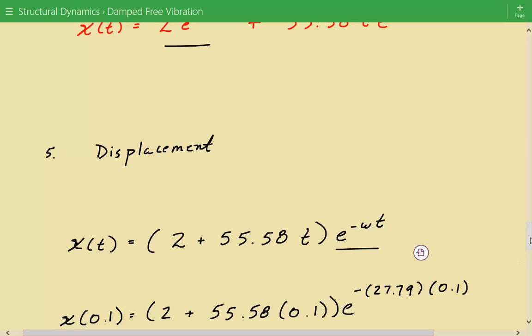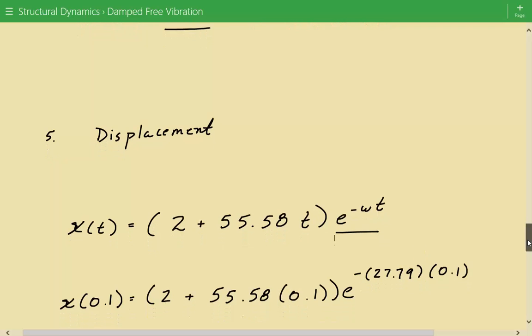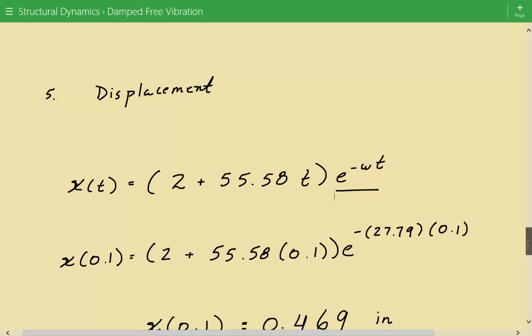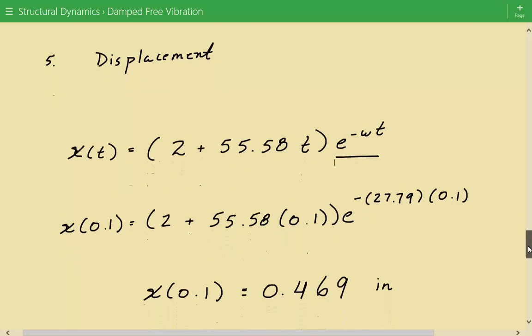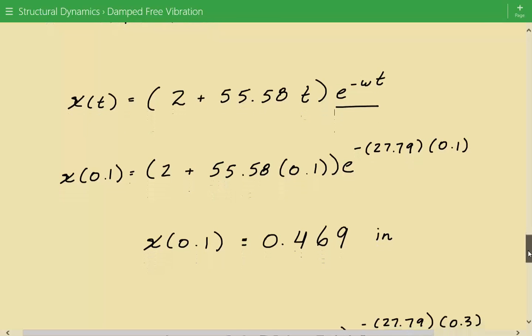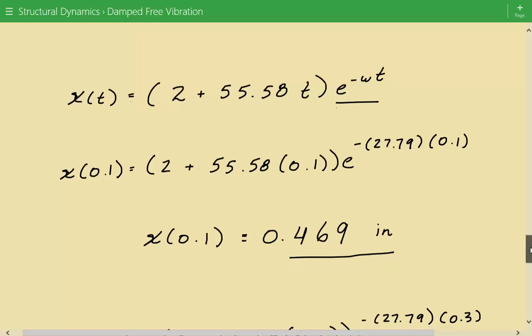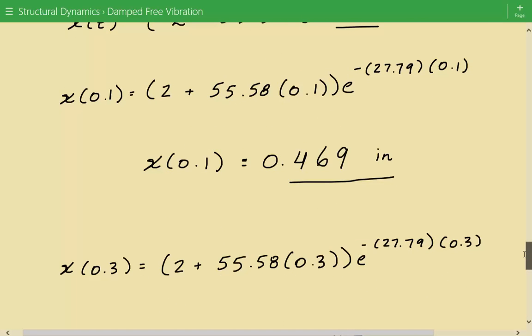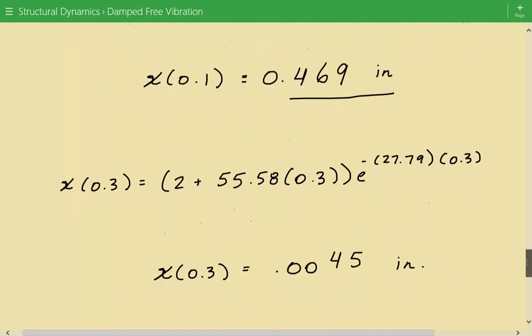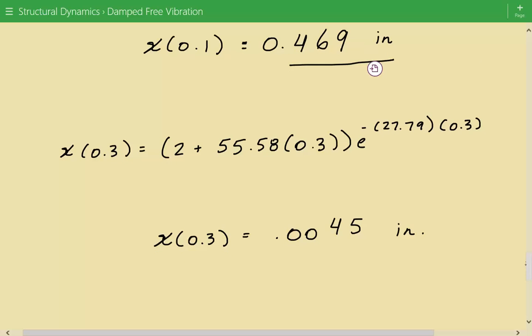So now we need to find the displacement after 0.1 seconds. So we just plug in 0.1 for t and we solve for the displacement. And the displacement after 0.1 seconds is equal to 0.469 inches. And we can do the same thing but now for 0.3 seconds. And so the displacement after 0.3 seconds is equal to 0.0045 inches.